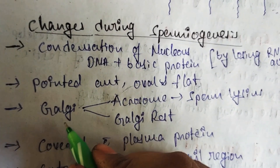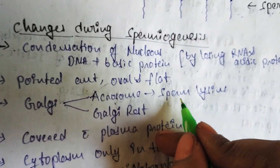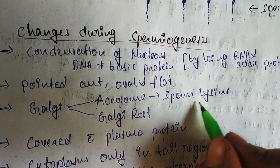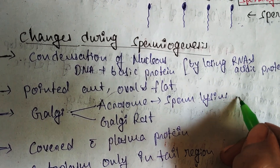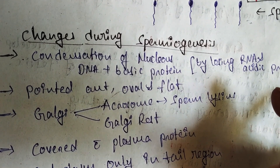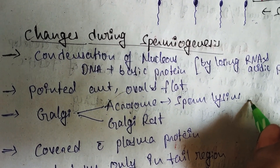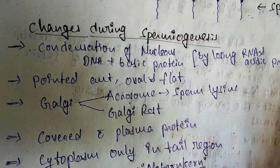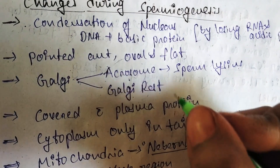The Golgi apparatus, centrioles, and cytoplasm are cellular organelles present in the spermatids. The Golgi apparatus is converted into the acrosome — the anterior part of the sperm. The acrosome produces sperm lysins, which are enzymes helpful in digesting the surrounding layers of the egg during fertilization.